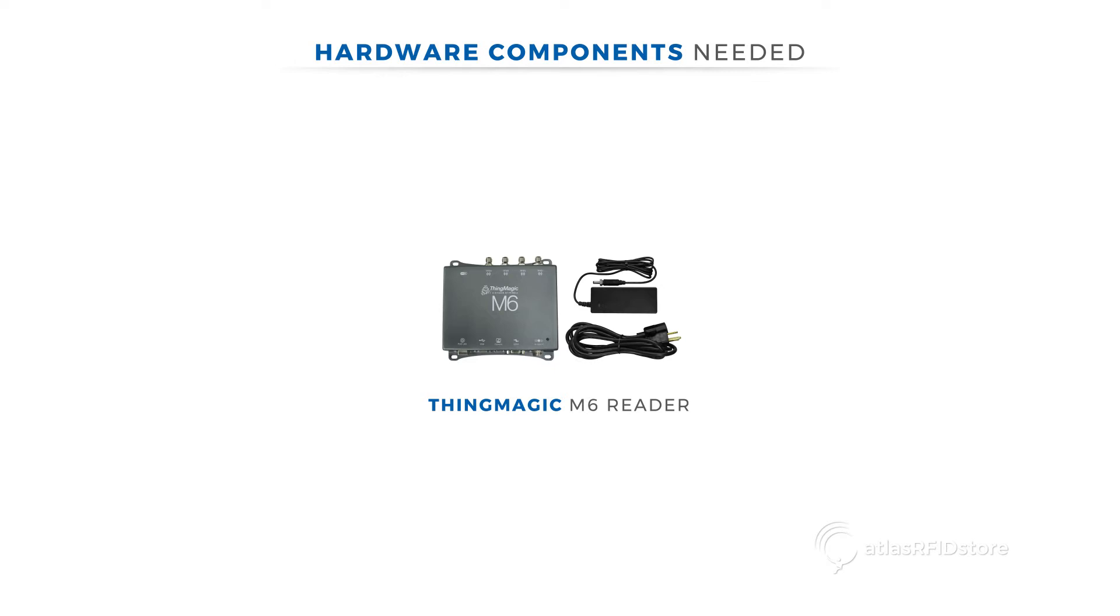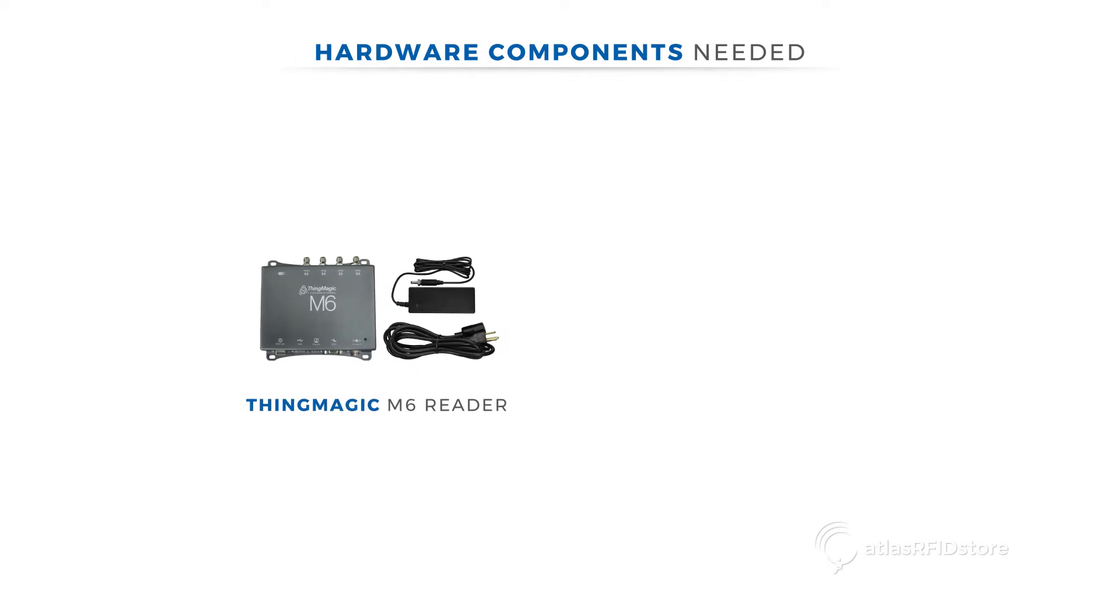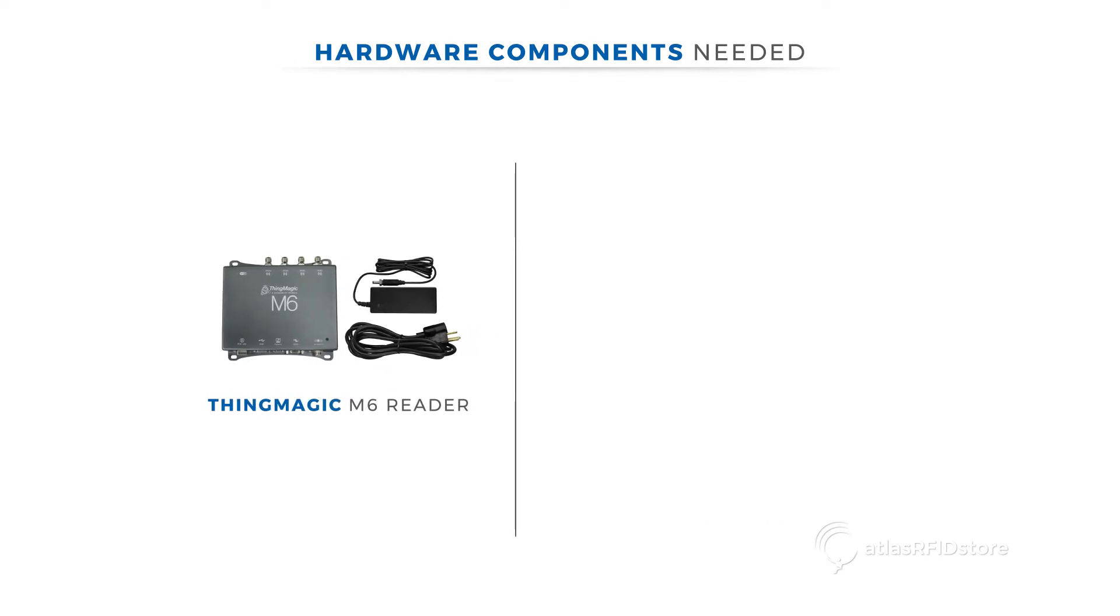In order to read and write tags with the ThingMagic M6 Reader, you will need a few more hardware components. You will need an antenna, an antenna cable, an Ethernet cable, and some RFID tags.